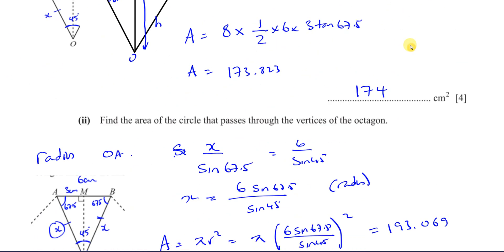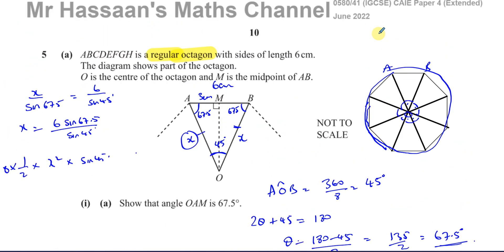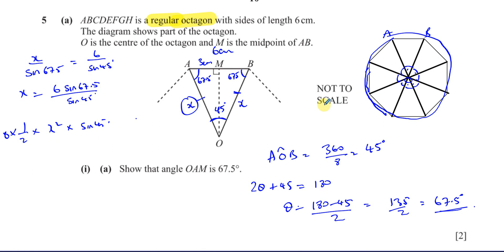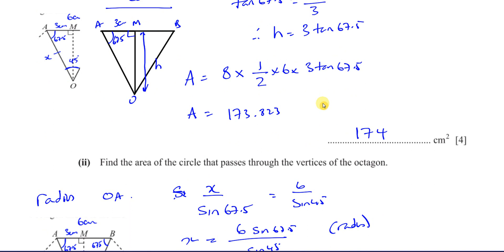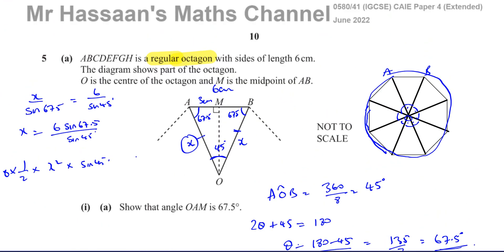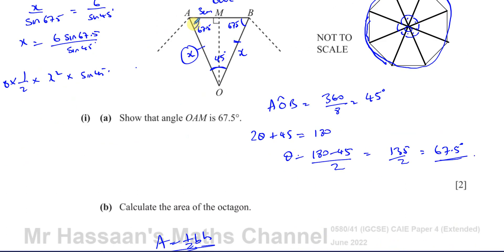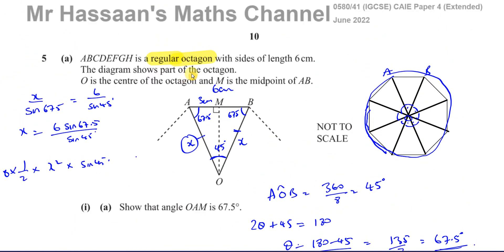There we have the answer to part 5a part 2 from the June 2022 paper. This question covers trigonometry and areas — there are a lot of different topics here. Part 5b I'll do in a separate video. Questions from this paper can be found in the playlist. You can also find related content under mensuration, basic shapes, and trigonometry playlists. Subscribe to the channel and thank you for watching — see you soon.